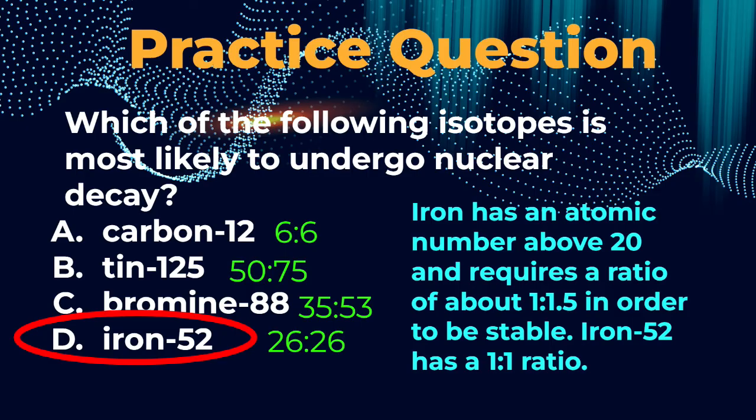Bromine has 35 protons according to the periodic table. If you subtract that from 88, you'll see that this isotope has 53 neutrons. That again is really close to 1 to 1.5. So I'm thinking letter C is stable as well.